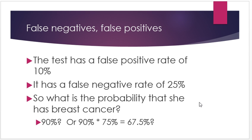So what is the probability that she has breast cancer? Is it 90% — just one minus the false positive rate? Or is it somehow combining these two numbers? Maybe it's 90% times 75%, which is 67.5%. How do you combine these two numbers to get the probability that she has breast cancer? You might want to pause the video and think about your estimate.